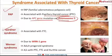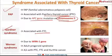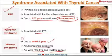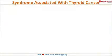Gardner syndrome is a variant of Familial Adenomatous Polyposis coli and is mainly associated with follicular thyroid cancer. Then comes Werner syndrome, which is associated with papillary thyroid cancer, follicular thyroid cancer, and Hürthle cell cancer. It occurs due to the WRN1 gene and is the adult progeria syndrome.